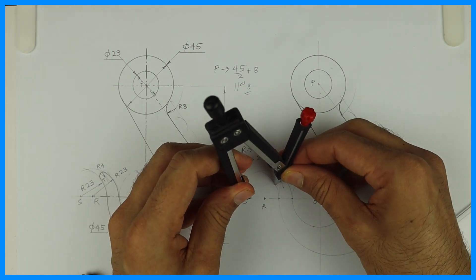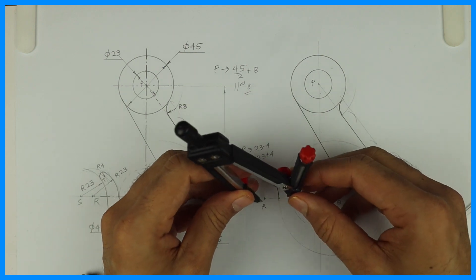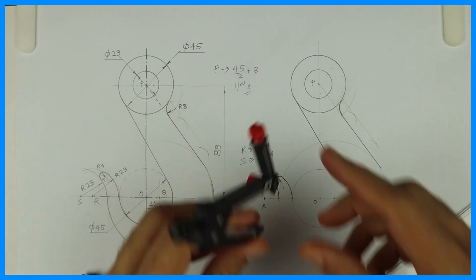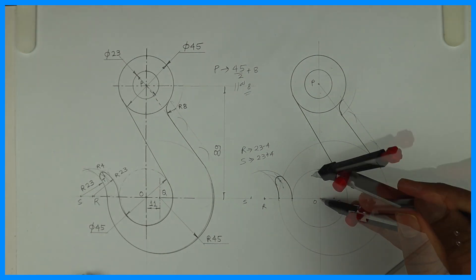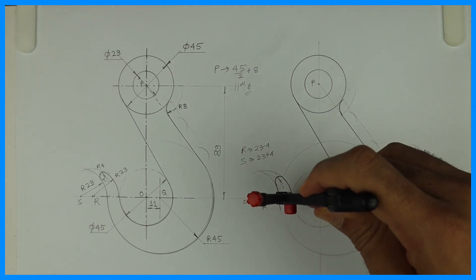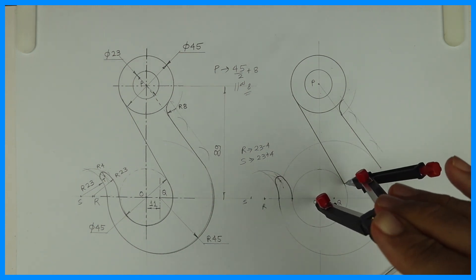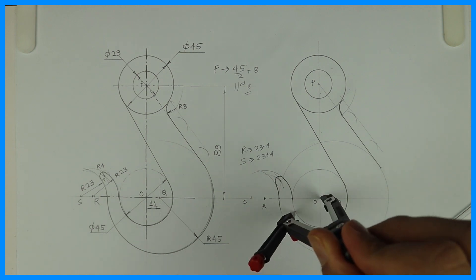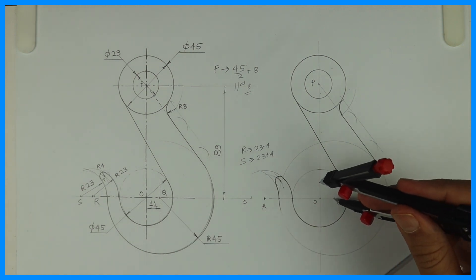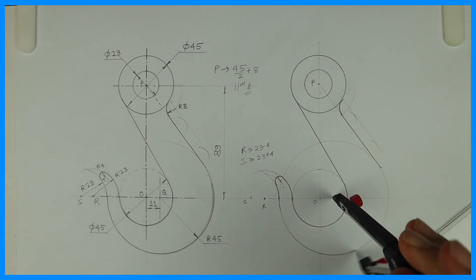Wherever it will cut, from that point we can draw radius 4. Now we can darken all the arcs — radius 23, taken from S and R. From O we will draw this circle at radius 22.5, and from Q we will draw radius 45.